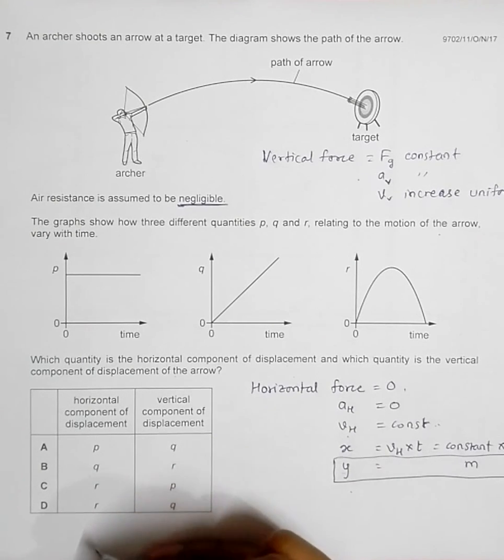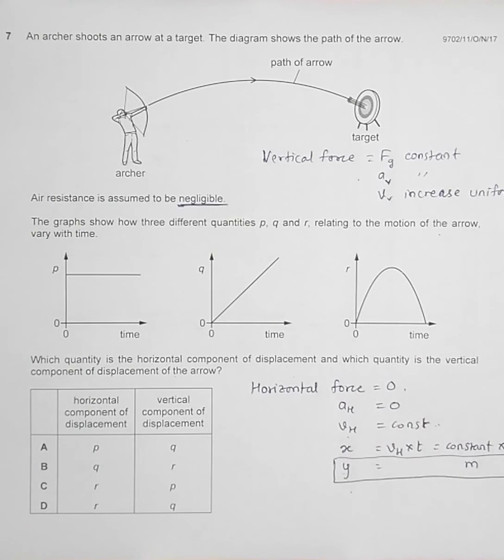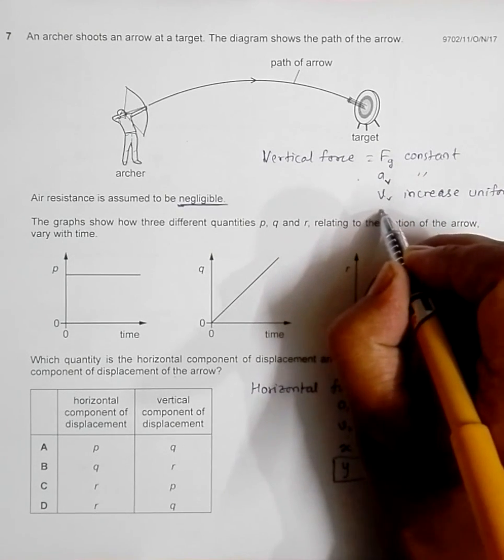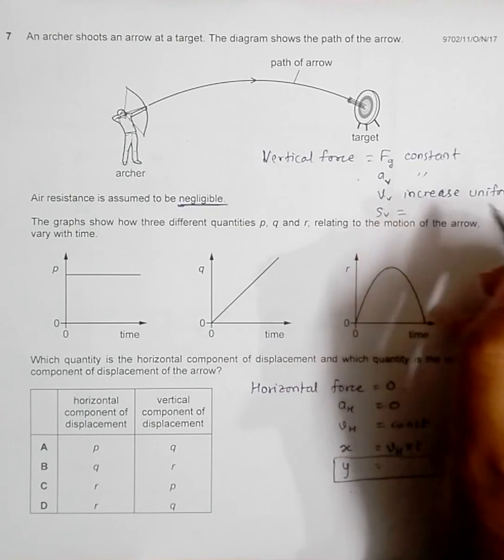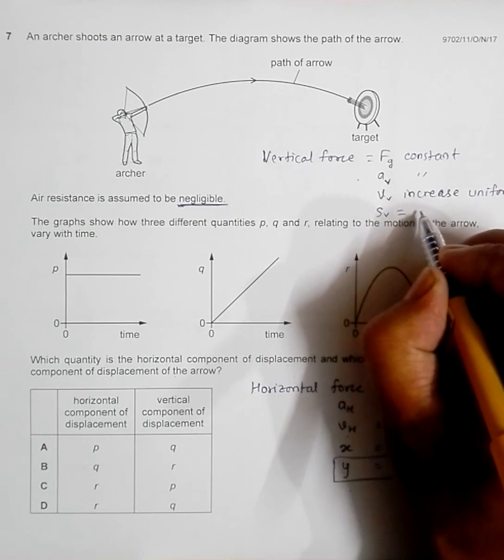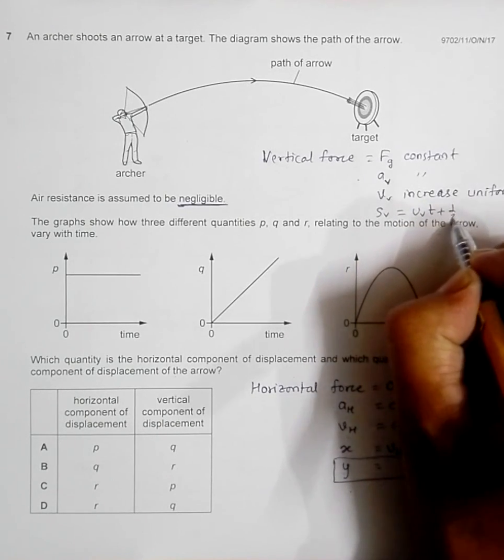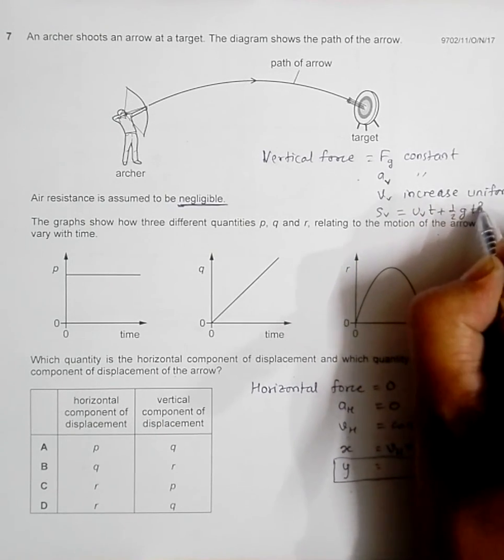Now for the vertical displacement SV, it will follow an equation like this: U vertical times time plus 1/2 G times T squared.